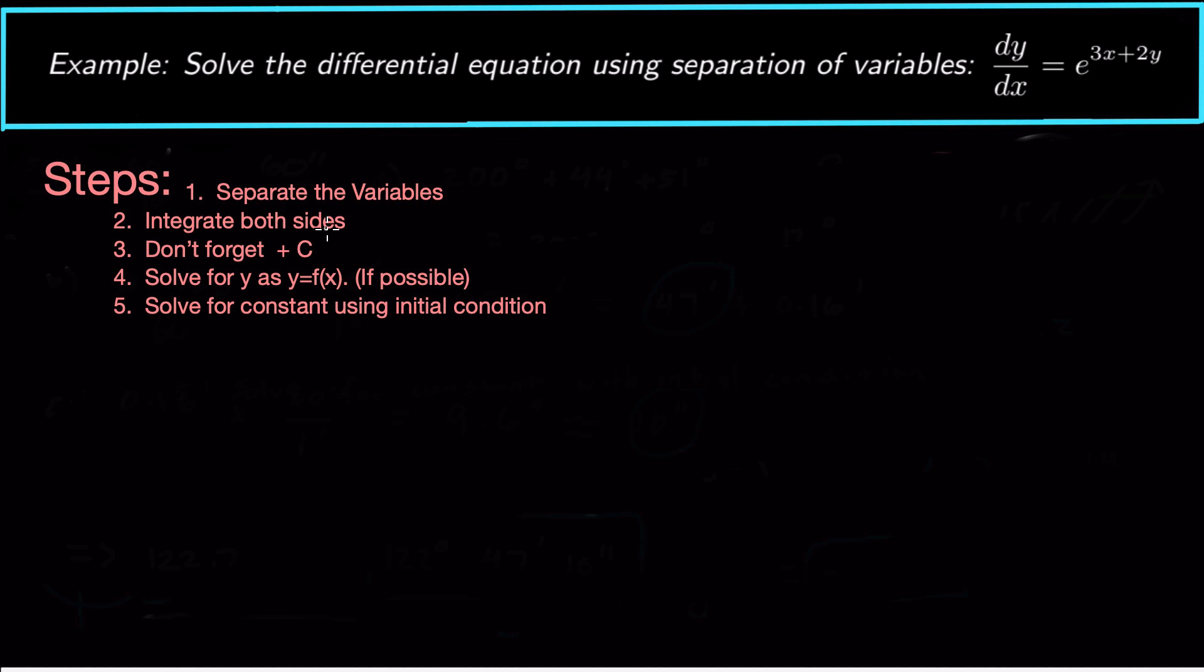The second step is to integrate both sides. On the left, you're going to integrate with whatever variable's over there. On the right, you integrate with the other variable over there. Number three, don't forget to add a plus C on either side. I generally add it to the X side because that's our independent variable and that's how we're going to solve for C usually if we have an initial condition. But it doesn't really matter what side you put the plus C on.